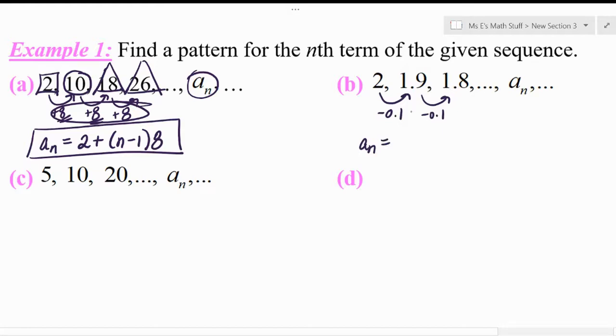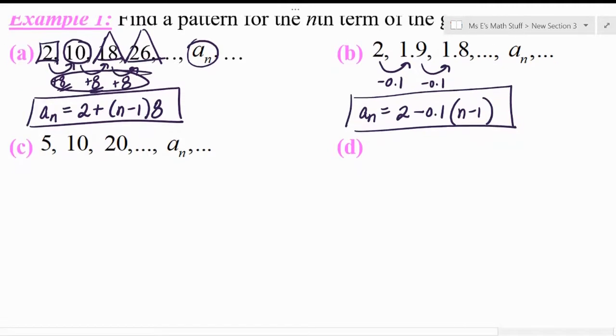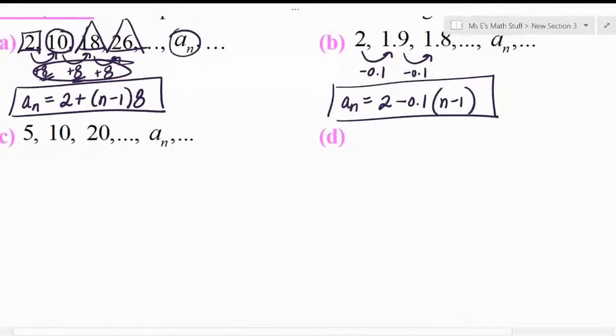So what's the nth term? Well, one way to write the answer would be to say it started at 2 and you just keep adding a bunch of negative 0.1s, which I'm just going to call subtracting 0.1. And how many 0.1s would you have subtracted to get to any nth term? Well, n minus 1 of them. So there you go. And I hope this makes sense on an organic level, not a just-because-I-told-you level.